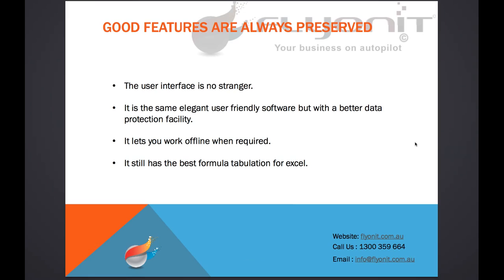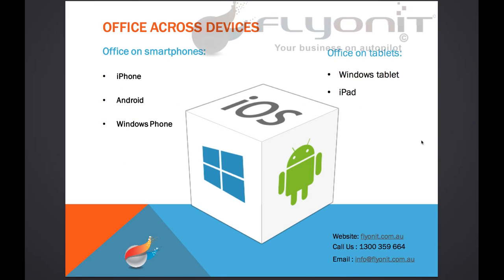This is just an overview summary of the great features present in Office 365. The user interface is no stranger — it is the same elegant, user-friendly software but with better data protection. It lets you work offline when required and still has the best formula tabulation for Excel. Mobile devices are properly synced up with Office 365, and it is the only provider with which this service works effectively, meaning you can access your emails, contacts, and calendars from anywhere.